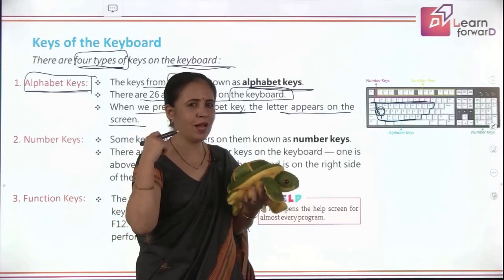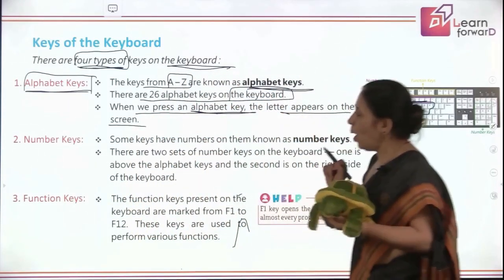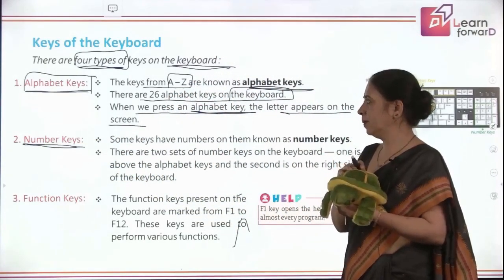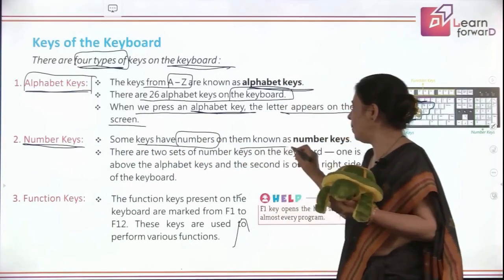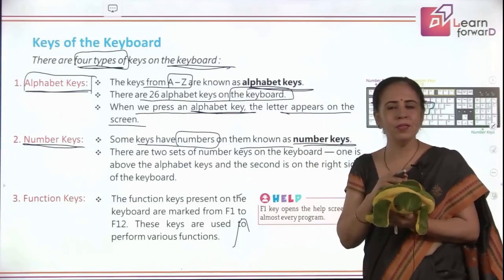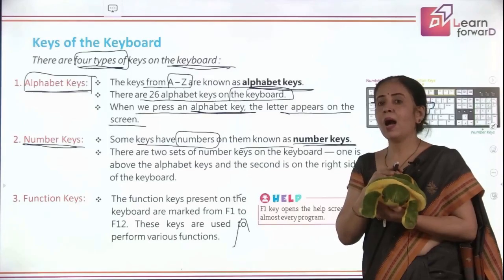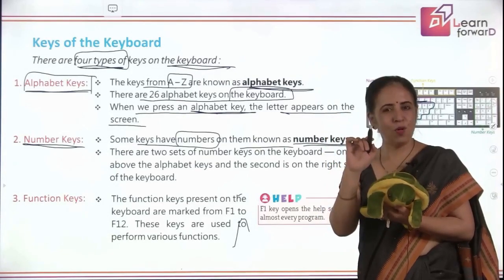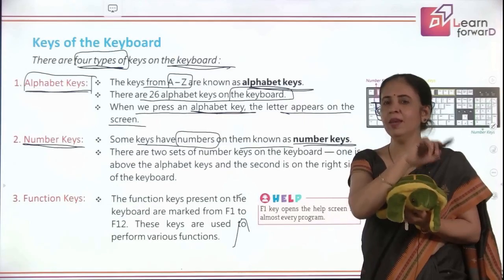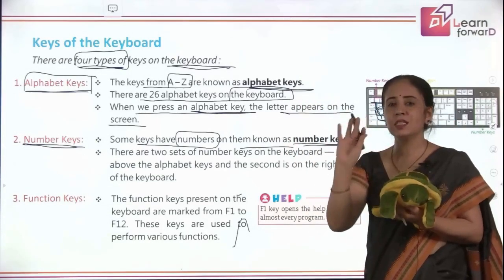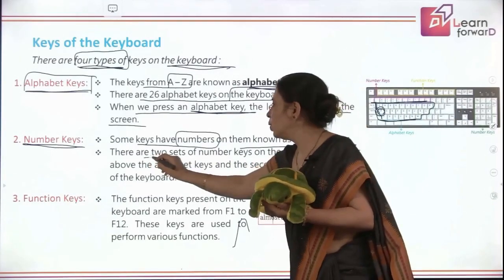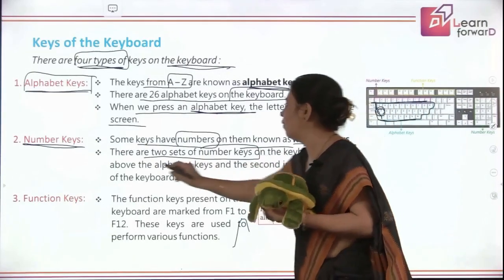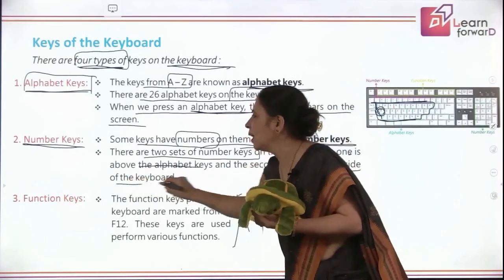Now we come to the second category of keys, which are called number keys. Some keys have numbers on them and we call them number keys. There are 10 numbers starting from 0, 1, 2, 3, 4, 5, 6, 7, 8, and 9. And there are two sets of number keys on the keyboard: one is above the alphabet keys and the second is on the right side of the keyboard.